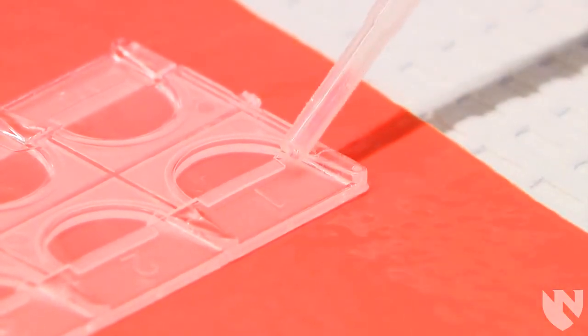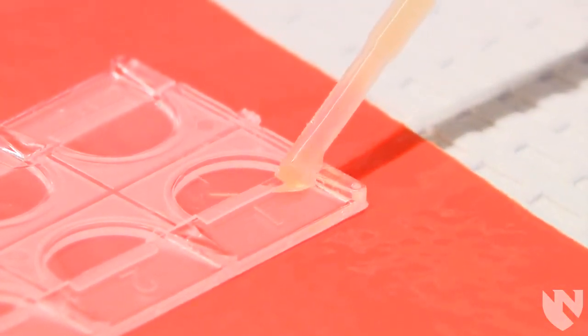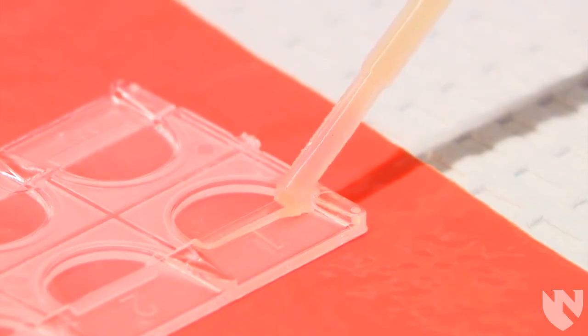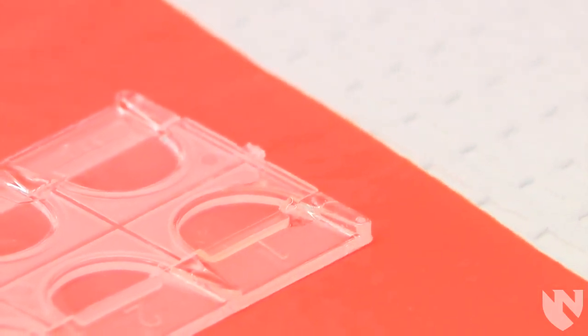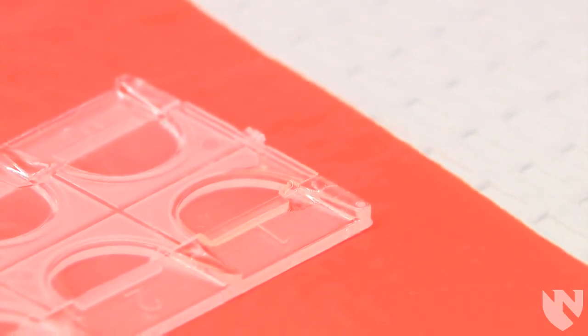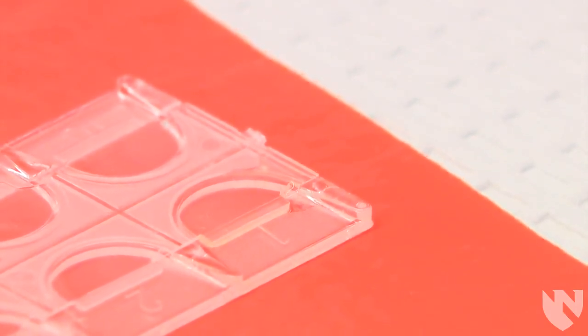Gently squeeze the pipette bulb until some of the urine leaves the pipette. The well fills by capillary action. Continue to squeeze the pipette bulb in one fluid motion until the well is completely filled with no bubbles.